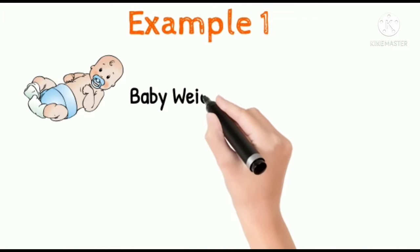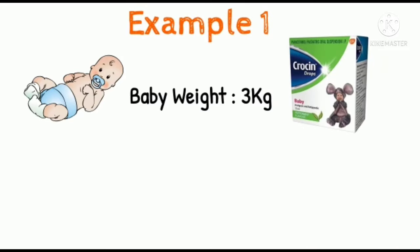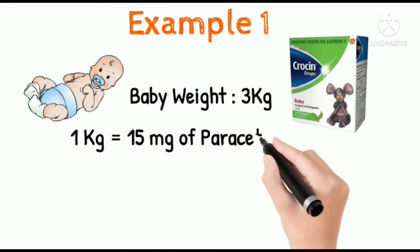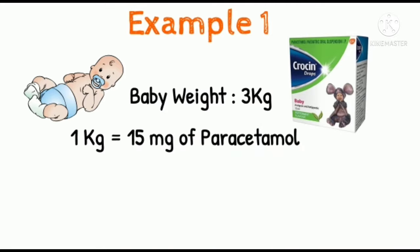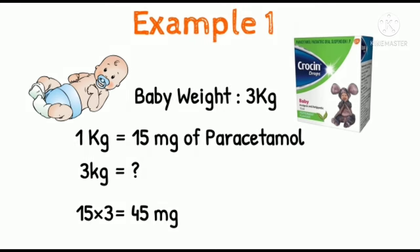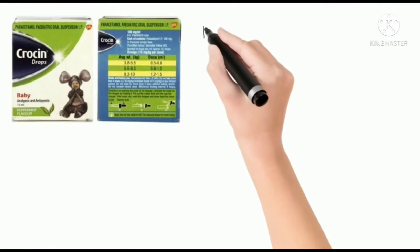For example, if a baby weighs about 3 kg and the doctor advises paracetamol drops, the maximum dosage for 1 kg is 15 milligrams. For 3 kg, that is 15 into 3, which is approximately 45 milligrams of paracetamol per dosage. So a 3 kg baby can have a maximum of 45 milligrams of paracetamol per dosage.